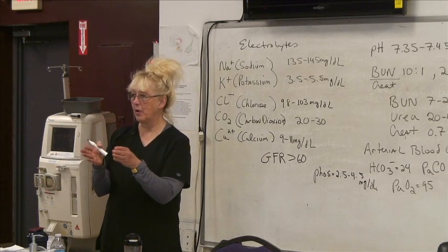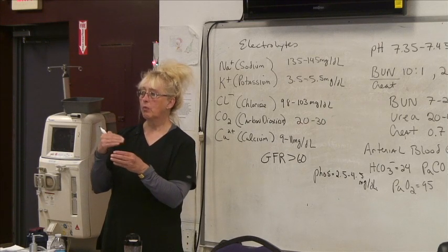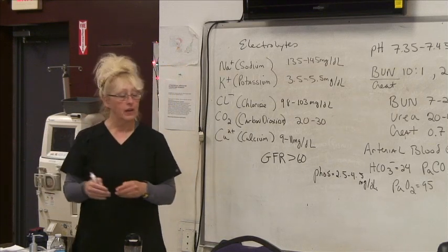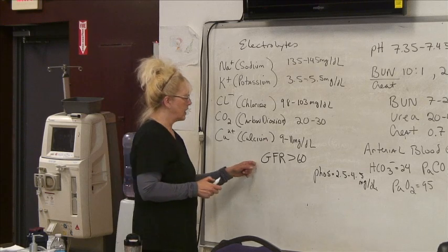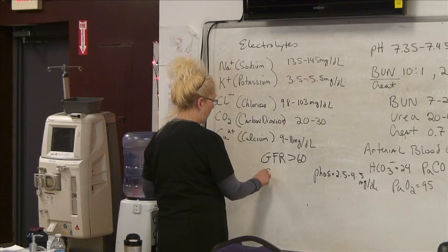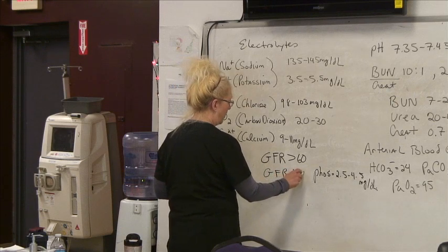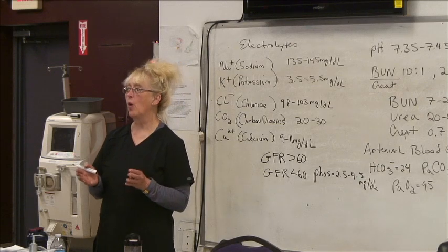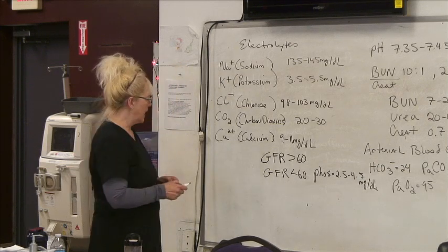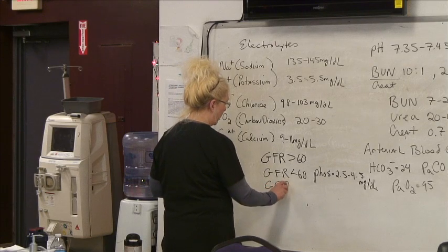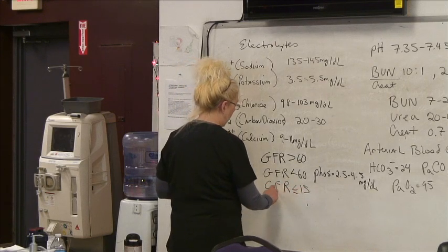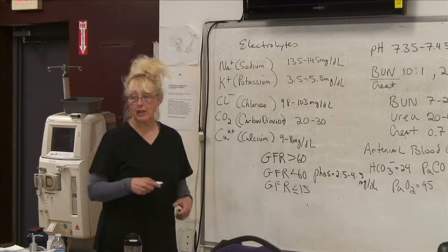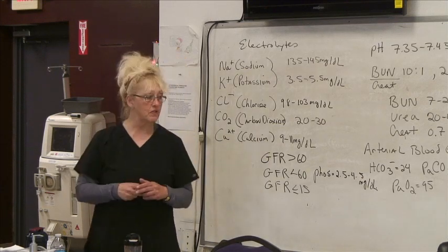It has to do with the diameter of the tubules, the rate of flow, and how fast it goes from point A to point B. The GFR should be greater than 60 in normal, healthy people. When the GFR is less than 60, somewhere in the 50s, the patient is in chronic renal failure. A GFR that is less than 15 is acute renal failure, meaning they may be looking at going into dialysis very shortly.